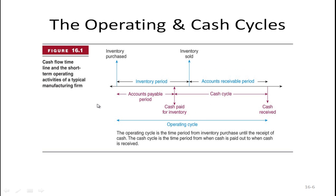Here's a picture that may be a better way to understand this. At time period zero, you purchase the inventory, then you pay for the inventory, and then you receive your money at the end. The entire period is the operating cycle, broken into parts: the inventory period (from when you purchased inventory to when you sold it), plus the accounts receivable period (how long it takes to get paid). The cash cycle is the time from when you paid for the inventory until you get paid, and the accounts payable period is the time your supplier is giving you credit.